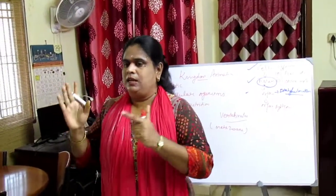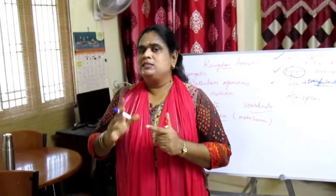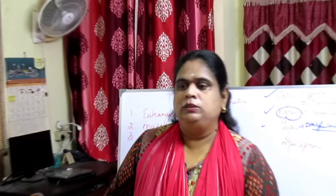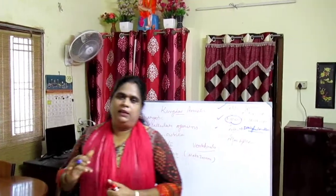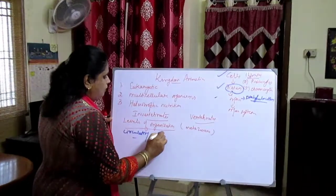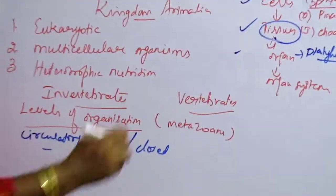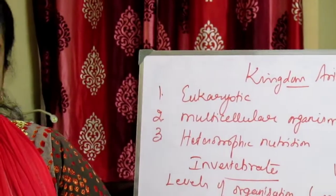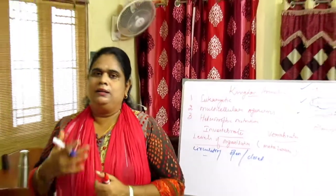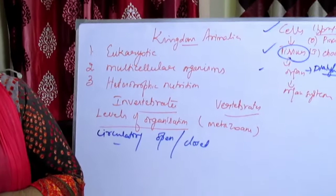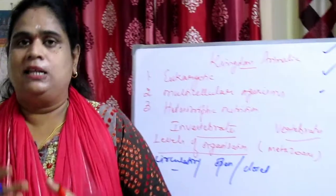The incomplete digestive system is found in Platyhelminthes. From Aschelminthes to chordates, all animals have a complete digestive system with two openings — a mouth and an anus. Similarly, the circulatory system is of two types: open type, where blood remains in the tissue spaces due to absence of blood capillaries, as in arthropods, molluscs, echinoderms and urochordates; and closed type, where blood circulates through vessels of varying diameters — arteries, veins and capillaries — as in annelids, cephalochordates and vertebrates.